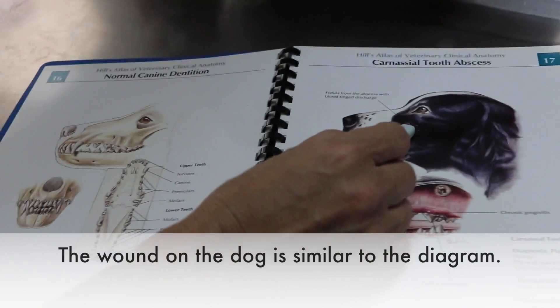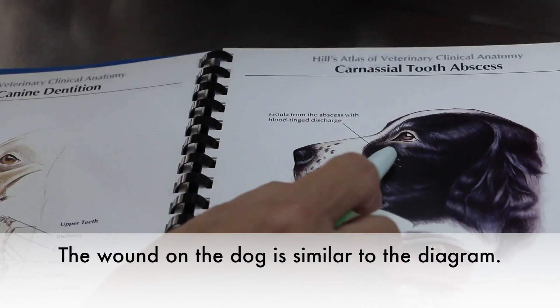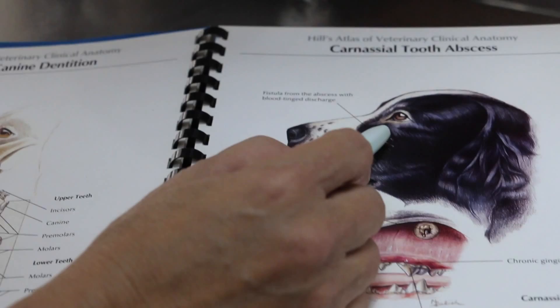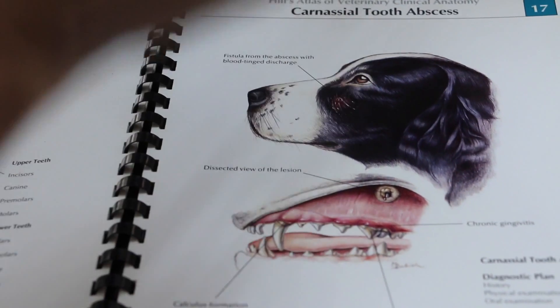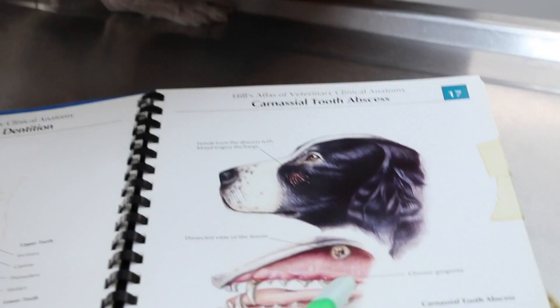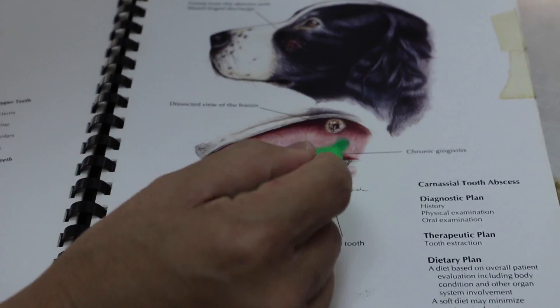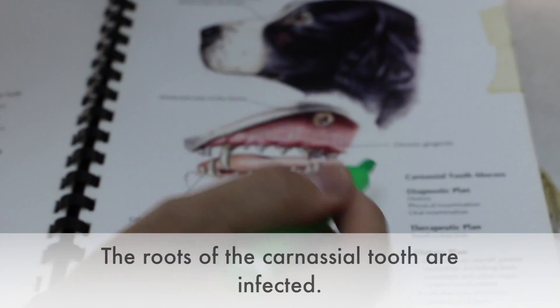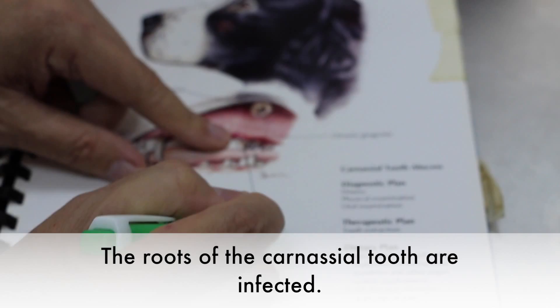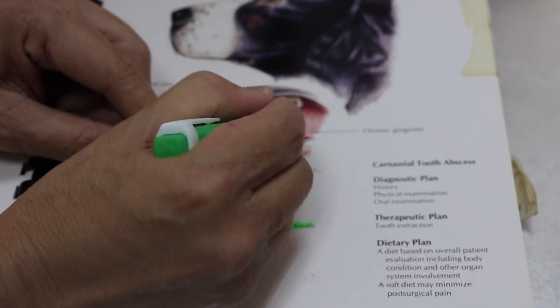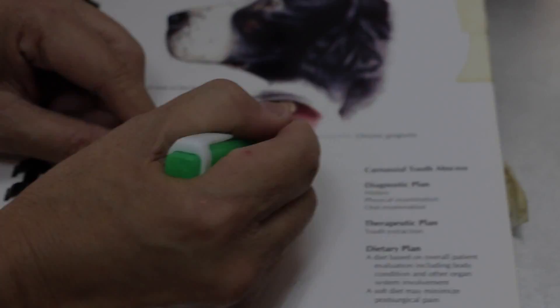There is a good point — almost similar cases. There is a wound here and a wound there, below the eye. There is a wound with a lot of pus that came out. So actually the problem is the tooth — this tooth is called the carnassial tooth. This big tooth inside is infected.